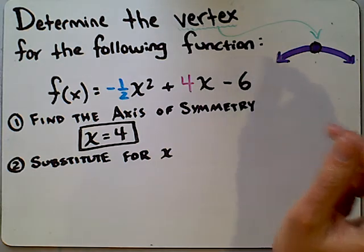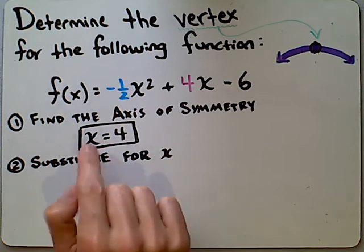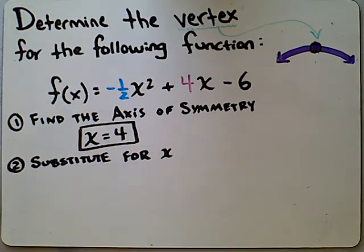The first step in finding the vertex is to actually find the axis of symmetry. So I'm just going to use my answer from the last video where x equals 4 is the axis of symmetry. And all you have to do to find the rest of the vertex is to take the 4 and substitute that for the x here and the x there.